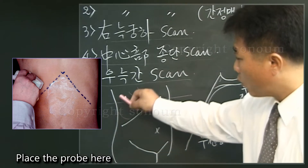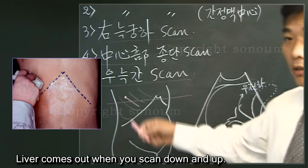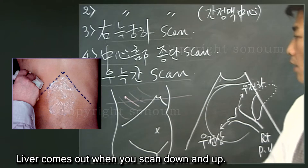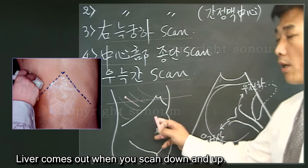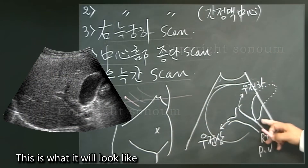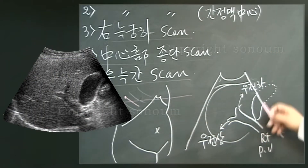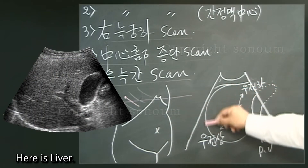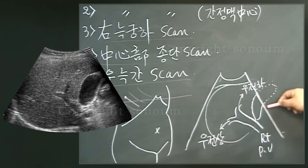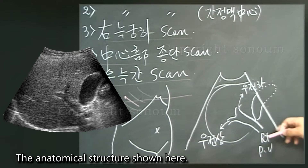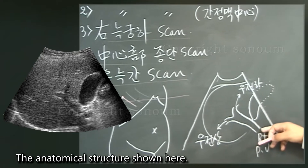Place the probe here — when you scan down and up, the liver comes out. This is what it will look like: here is the liver and its anatomical structures.